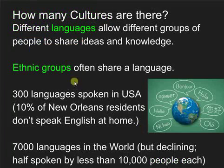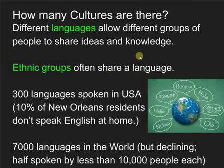Language is so useful that it's one of the main ways that we can try and distinguish one culture from another. Ethnic groups often share a language, and that allows them to share ideas and knowledge. And so we often find that where people share a language, they'll often share other cultural traits. There are about 300 languages within the US, and within New Orleans, about one in 10 homes don't speak English as their main language.